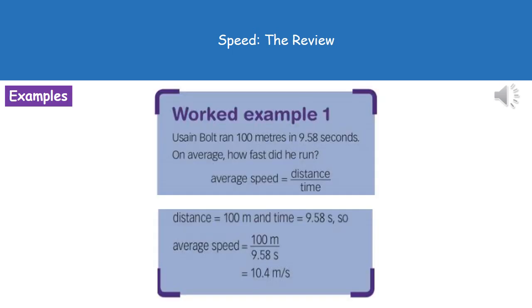To give you an example then of the kind of question that you might be asked, we've got an example here for you. Usain Bolt ran 100 meters in 9.58 seconds. On average, how fast did he run? The equation you'll find on page two is speed equals distance divided by time.